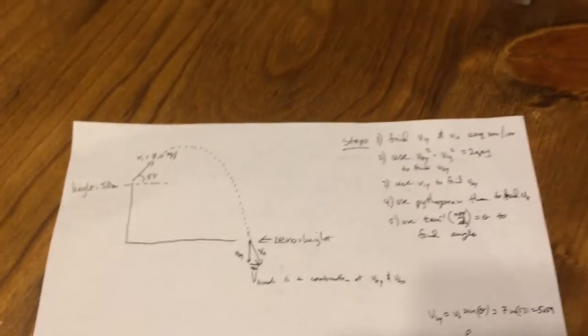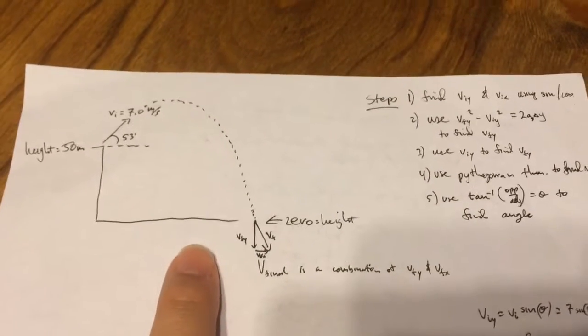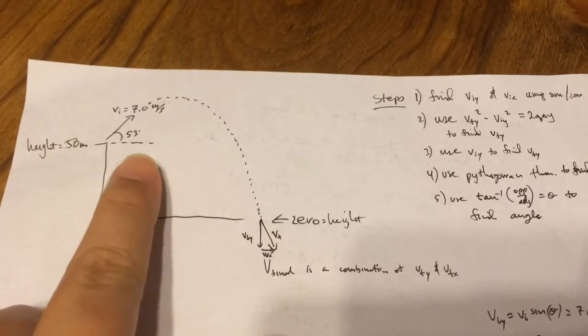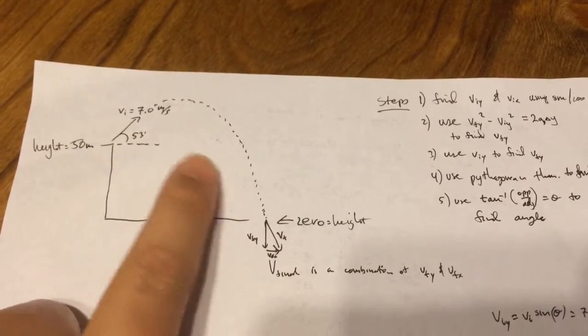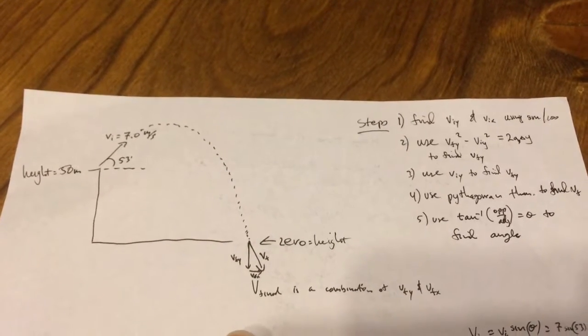For number six, it's a little bit trickier, but this is the picture: starting height, finishing height, initial. This is more or less what it would look like. The trick here is that you have to find the final.